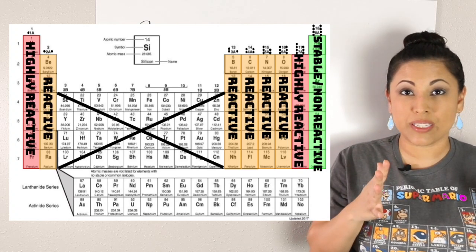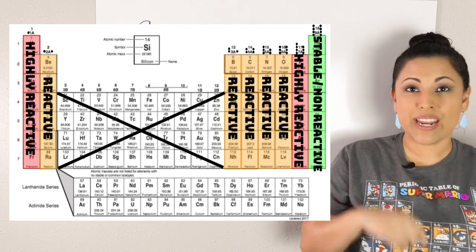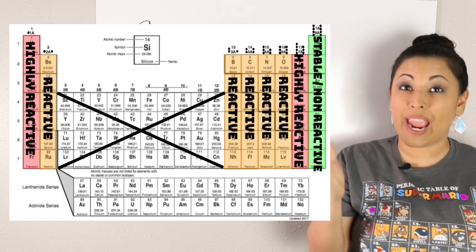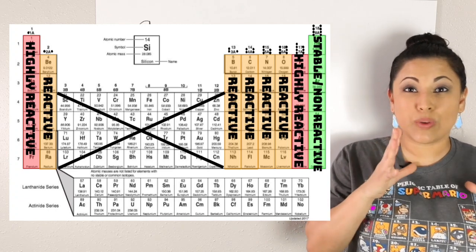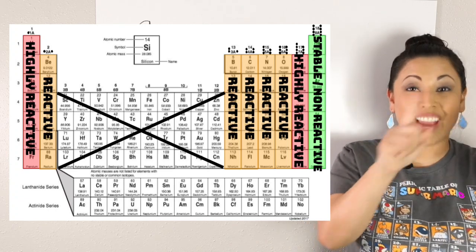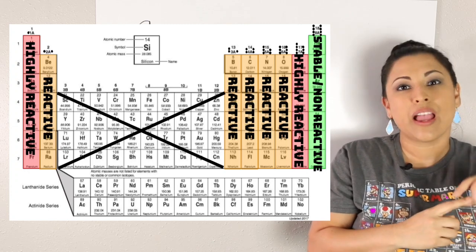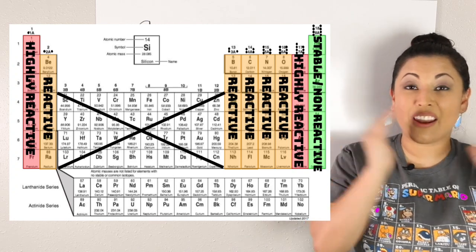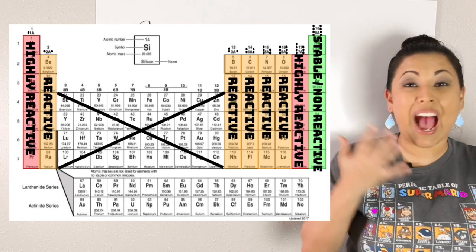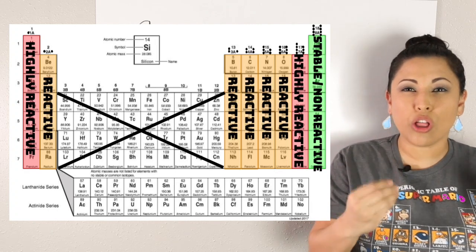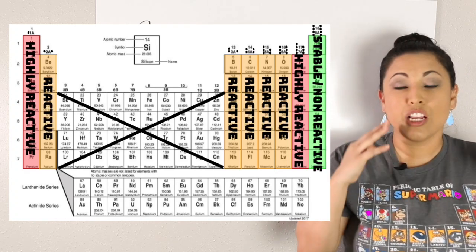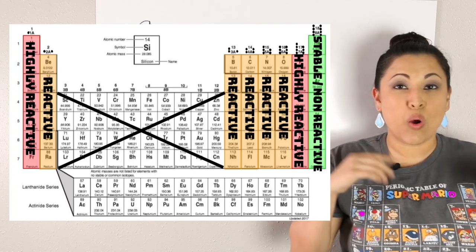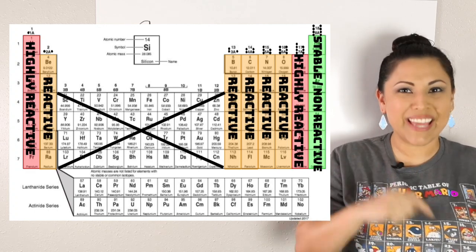What about those highly reactive groups? If you notice, those are groups 1 and 17. Those are highly reactive because they're so close to being to eight. Group 17 just wants to reach out and grab one more valence electron to make it a full shell. Group 1 has one valence electron. That means it can get rid of that one and on the next shell it would be full. They're both highly reactive because they're so close to getting to that happy place. Our highly reactive groups are going to be groups 1 and 17.